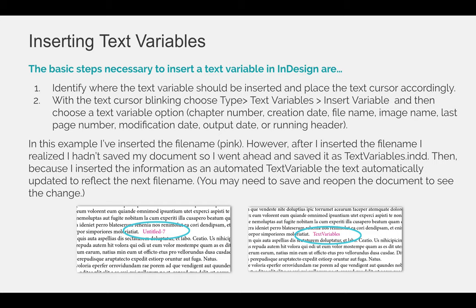In this example, I've inserted the file name, and I've colored it pink so you can see it. However, after I inserted the file name, I realized I hadn't saved my document. So I went ahead and saved it as textvariables.indd. Then, because I inserted the information as an automated text variable, you can see the text automatically updated to reflect the new file name.